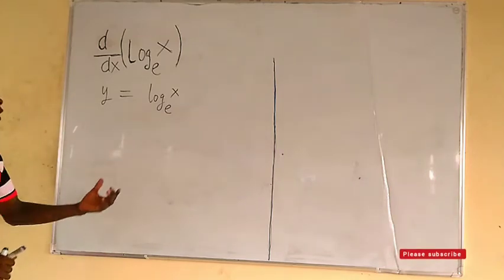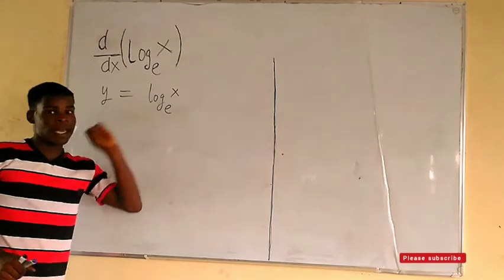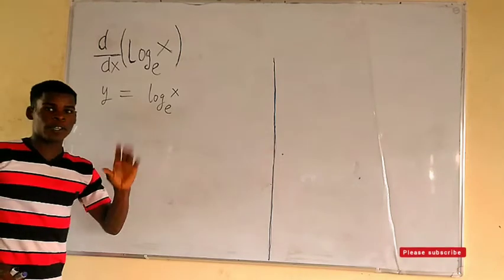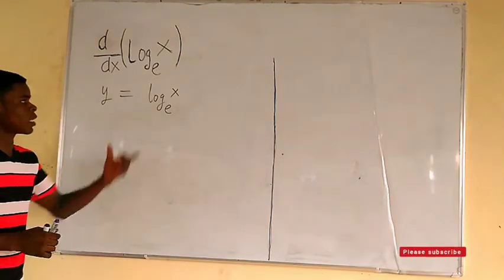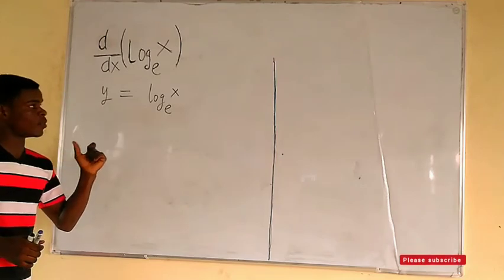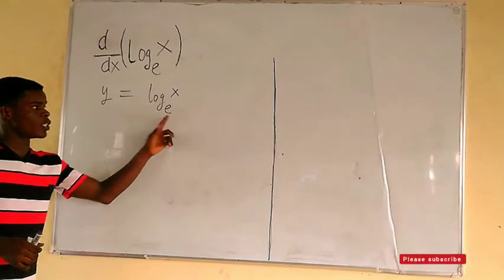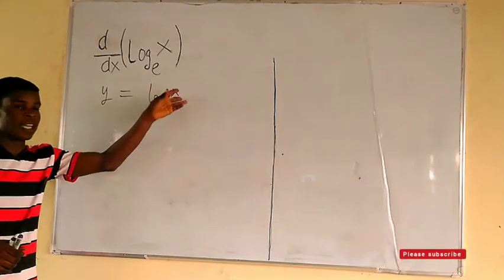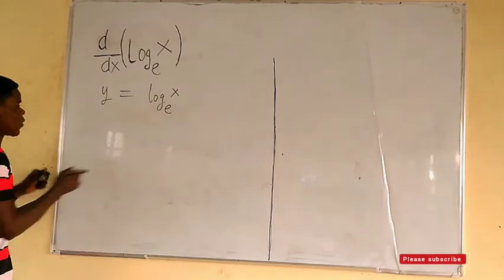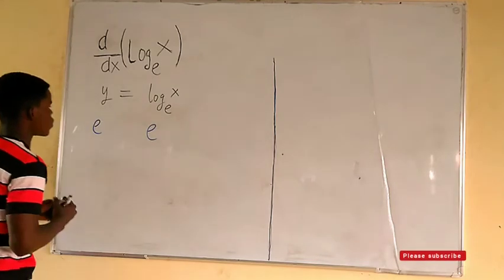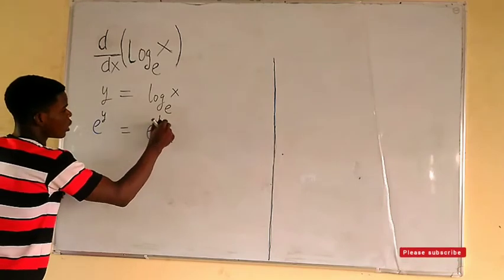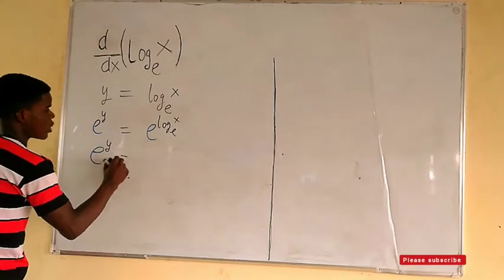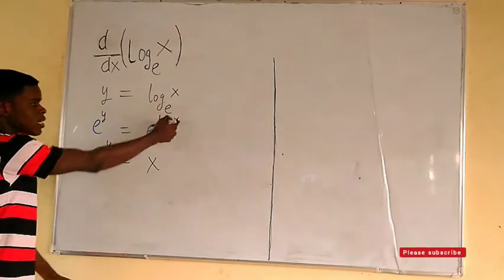At this point I would like to isolate x. We make e the base on both sides, because e to the log base e gives us x. So we take e as a base on both sides: y equals log of x to base e becomes e to the power y equals x on the right-hand side.